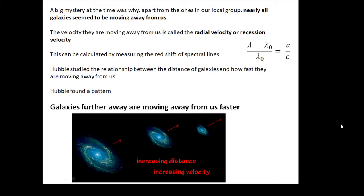Lots of galaxies are moving away from us, and Hubble studied the relationship between how far away galaxies were and how fast they were moving away from us, and he found a pattern. What Hubble found was that the further away the galaxies were, the faster they were moving.